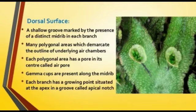Gemma cups are present along with the midrib region. Each branch has a growing point situated at the apex in the groove, called the apical notch. This concludes the description of the dorsal surface.